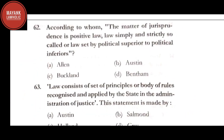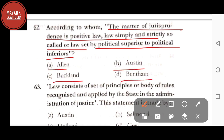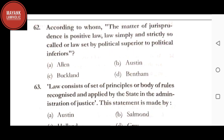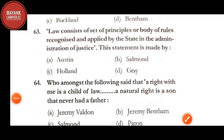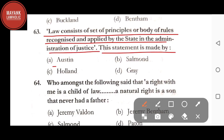Question number 62: according to whom the matter of jurisprudence is positive law — law simply and strictly so called — or laws set by political superiors to political inferiors — option A: Allen; option B: Austin; option C: Buckler; option D: Bentham. The correct answer is option B, Austin. Question number 63: 'Law consists of a set of principles or body of rules recognized and applied by the state in the administration of justice' — this statement is made by Salmond.